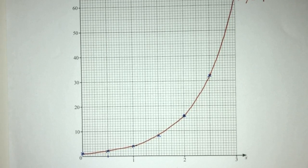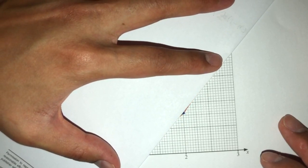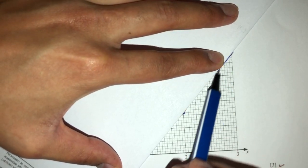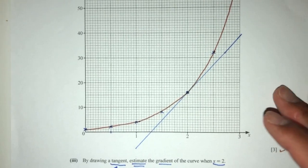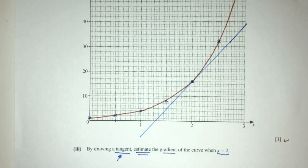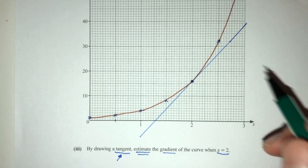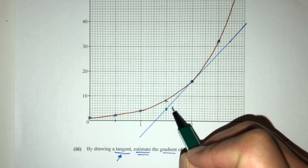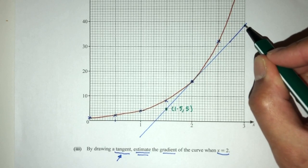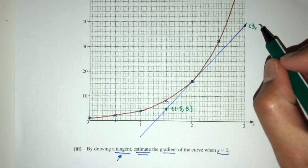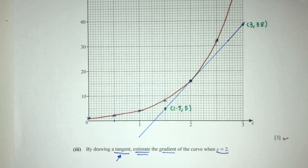You have to make it touch that point as closely as possible. As you can see, I will have a straight line touching that point — that will be my tangent to my graph. To find the gradient, since we have the line already, we need to find two points on the line. On my line, I can choose (1.5, 5) and then (3, 38). I chose two points that we can use to find the gradient.